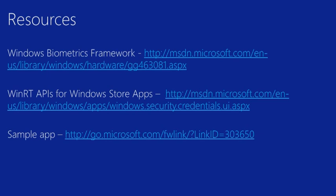Here are a few resources: the Windows Biometric Framework documentation, the MSDN documentation for the WinRT APIs that your store apps can use — including the two APIs shown today — and a link to the sample app. The sample app may be slightly different from what was shown here, but uses the same two APIs to demonstrate how you could use fingerprints in your apps.